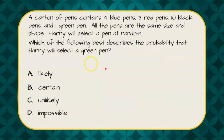So here's our question. We're told that we have a carton of pens that contains four blue pens, three red pens, and ten black pens with one green pen. All of the pens are the same size and shape, meaning they're all as likely to be drawn out of a box. And Harry is going to select one of his pens at random.